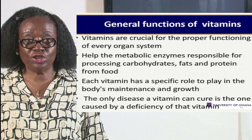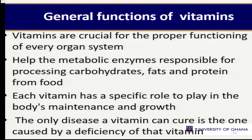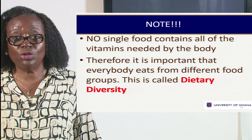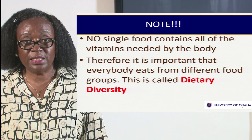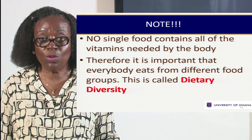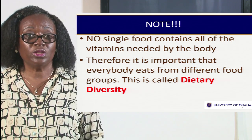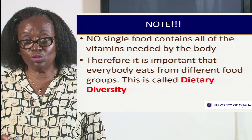These vitamins are essential for proper function of every organ system in our bodies. They also play an important role in growth and maintenance, especially for children. If there is a deficiency of any particular vitamin, no other nutrient can solve it except that vitamin alone. That is why dietary diversity is the key — eating from a wide range of foods, vegetables, and fruits. It shouldn't be the same fruit every day; there should be variety.